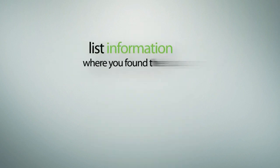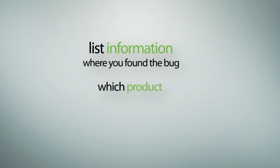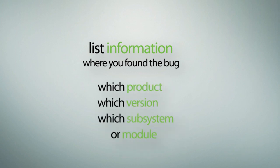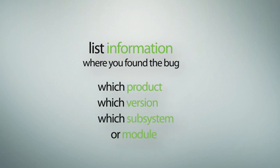So what details should go into a bug report? Firstly, you should list information about where you found the bug, such as which product, which version, and which subsystem or module the bug was in.